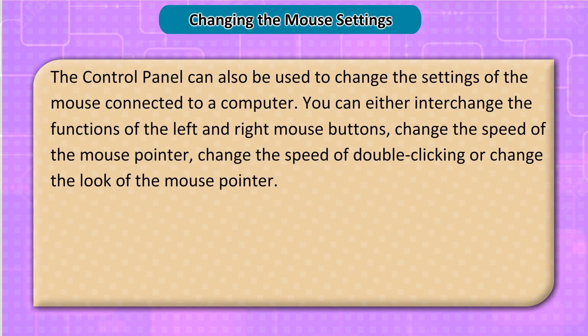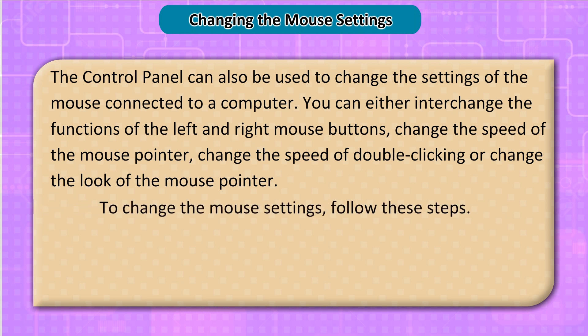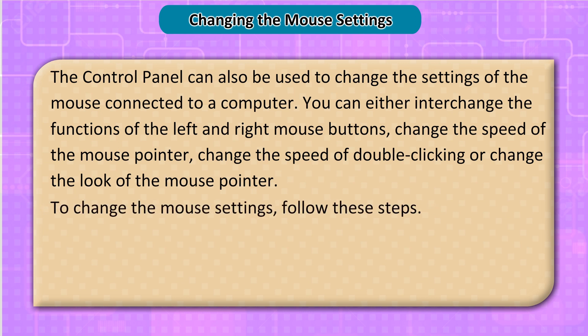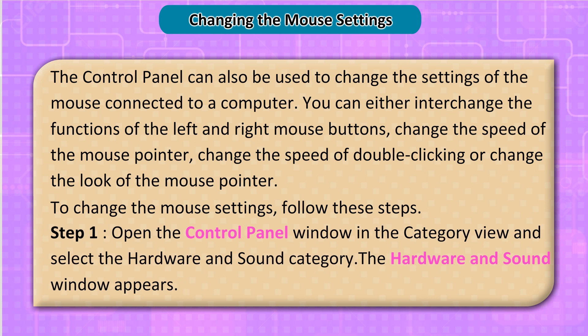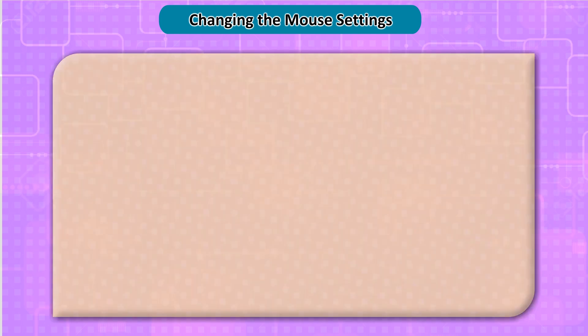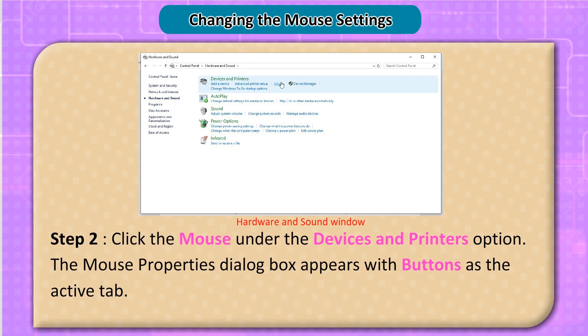The Control Panel can also be used to change the settings of the mouse. You can interchange the functions of the left and right mouse buttons, change the speed of the mouse pointer, change the speed of double-clicking, or change the look of the mouse pointer. To change the mouse settings, follow these steps. Step 1: Open the Control Panel window in Category View and select the Hardware and Sound category. Step 2: Click Mouse under the Devices and Printers option. The Mouse Properties dialog box appears with Buttons as the active tab.